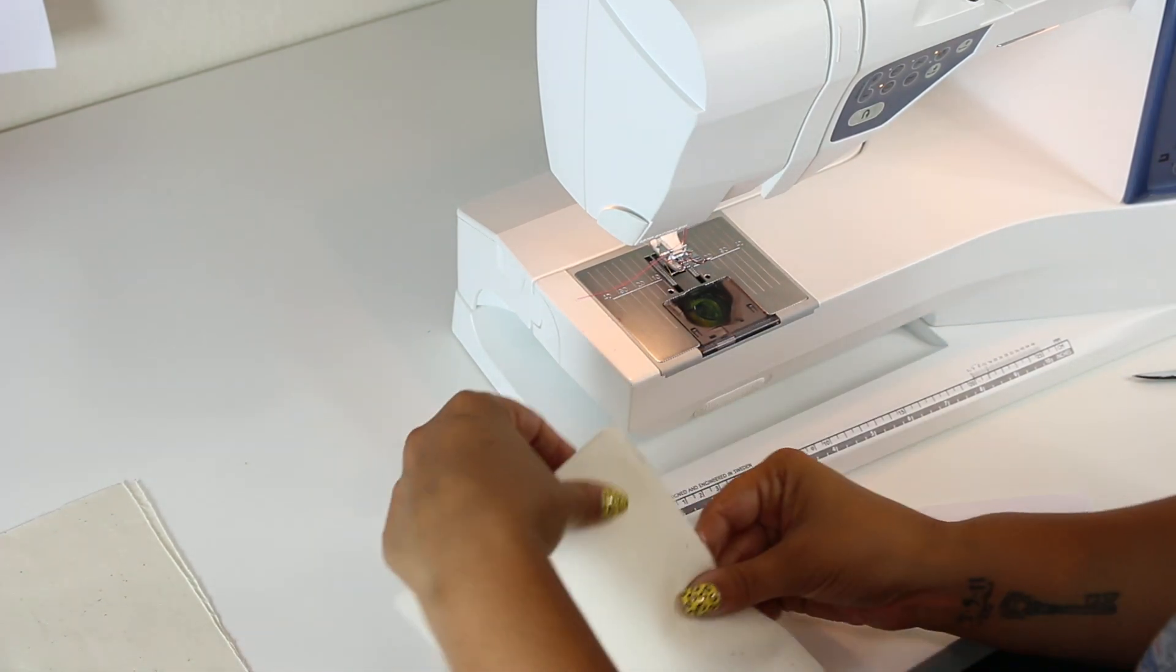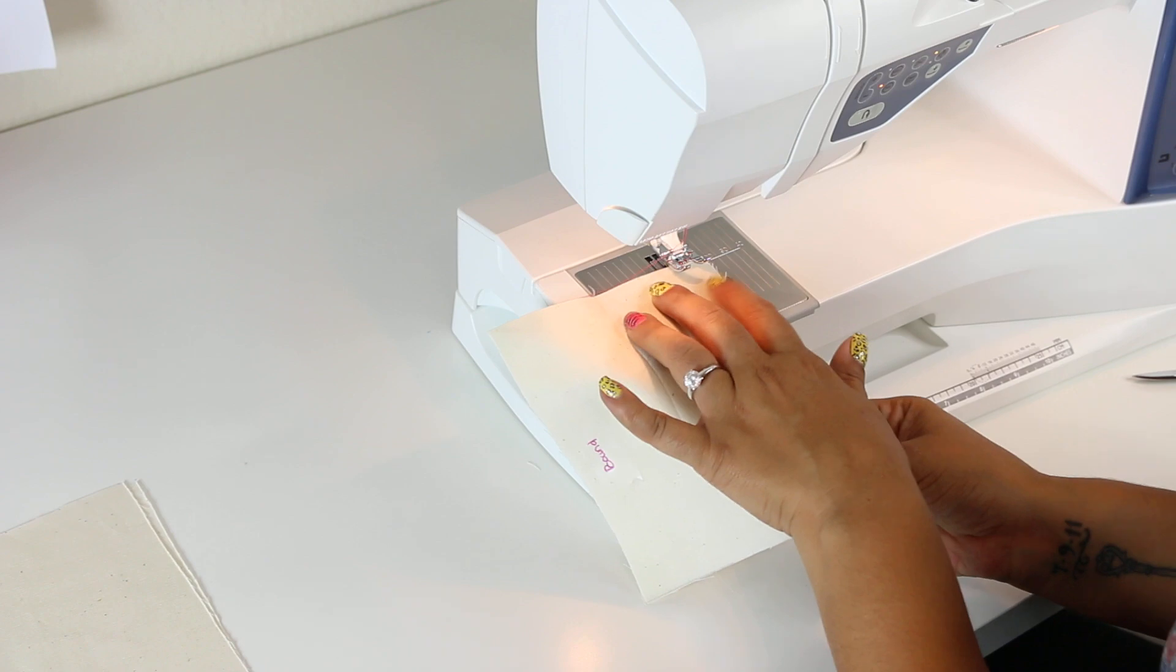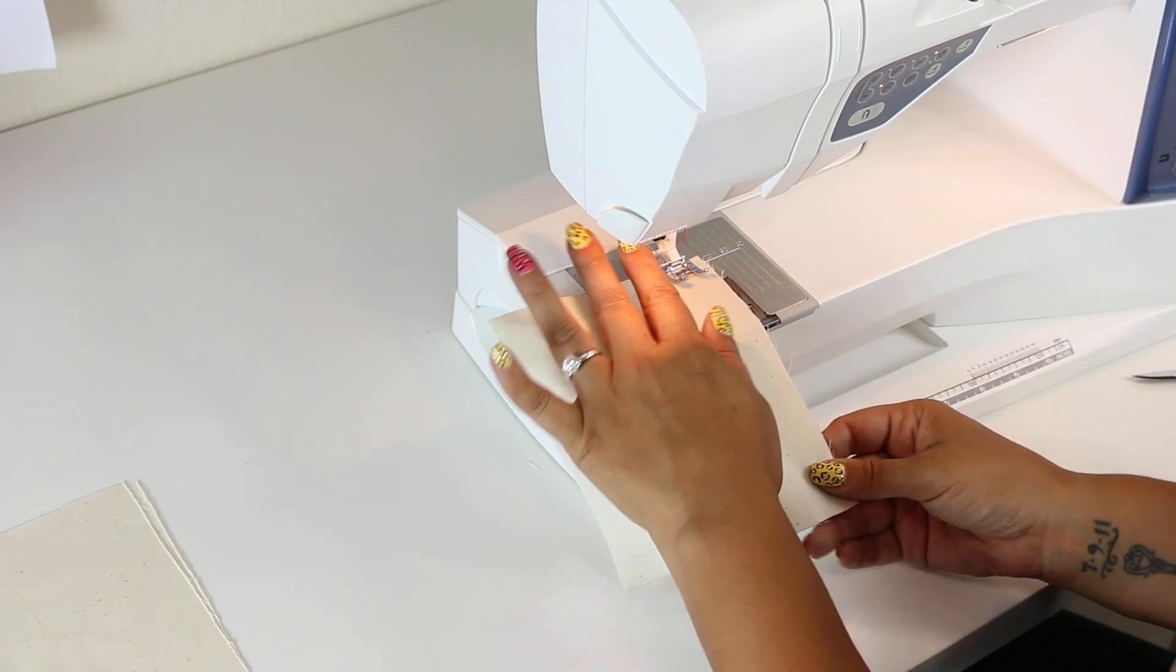For a bound buttonhole, you're going to sew your seam allowance the way you normally would.